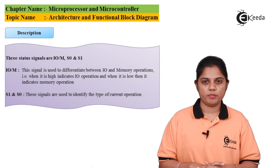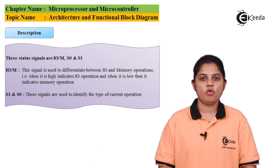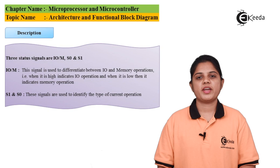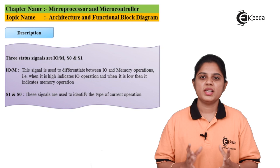These are the different characteristics we need to understand about the microprocessor before using it for an application. I hope you have understood the block diagram of a microprocessor, the example of the 8085, and how address bus, data bus, and all these blocks work together to perform different types of applications. Thank you for watching this video. Stay tuned to eKIDA, do subscribe.